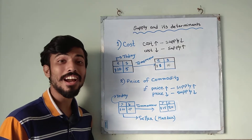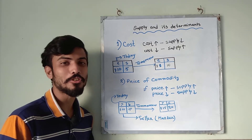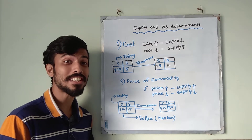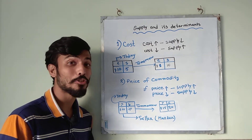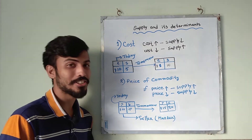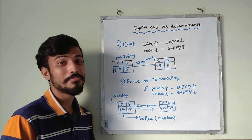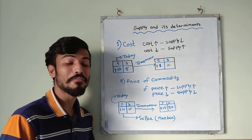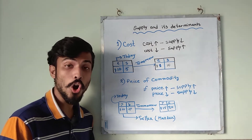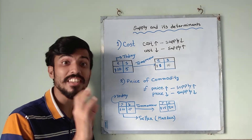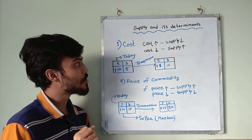Hello, welcome to Easy Learning Academy. Today I am going to discuss a very important topic of microeconomics: supply and its determinants. A determinant refers to a factor which affects supply, or which contributes to an increase or decrease in supply.